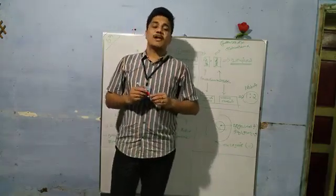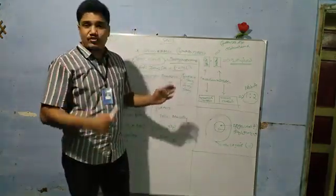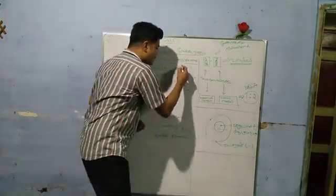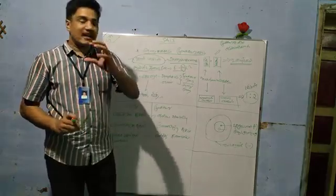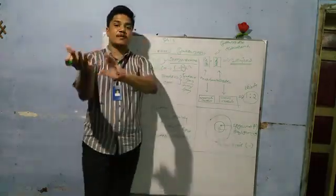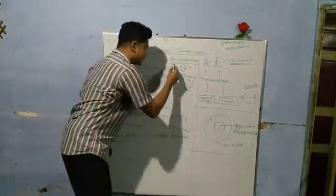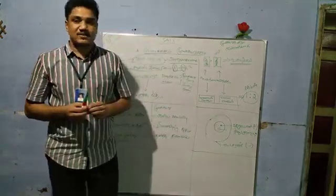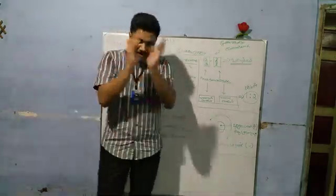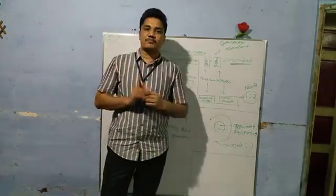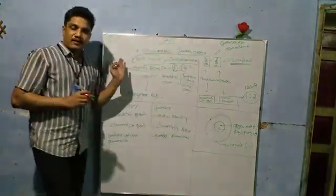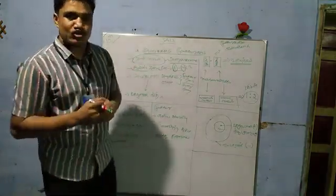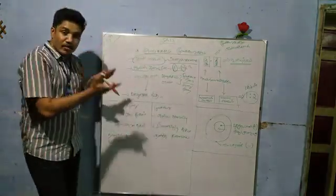E is equal to mc². How do we ask this question? E is equal to mc² — what is mass? What is energy? The mass is named as a constant. It is called Albert Einstein's formula: E is equal to mc².